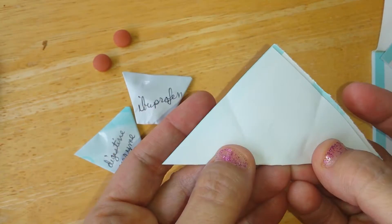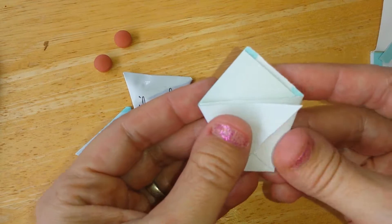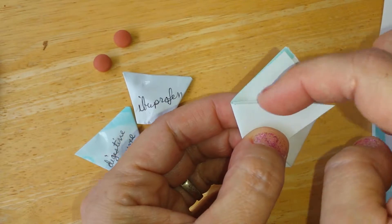So basically we have the square, we fold it in half so it's a triangle, fold, fold, and note this part is level.